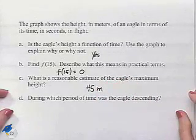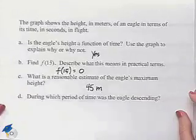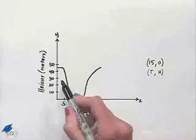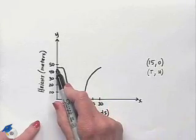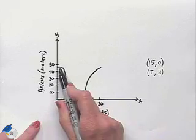And then finally, during which period of time was the eagle descending? We're going to notice that we have a section of the graph to start with which appears to be constant. That means at that height of 45.